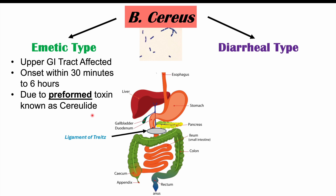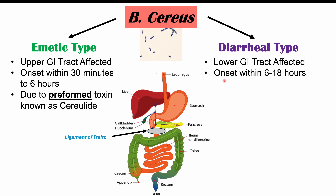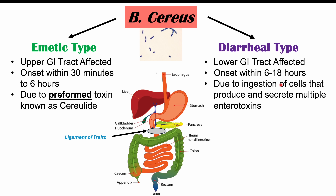Cerealide is produced by spores of this particular bacteria. Those toxins are inside food like rice, and when we consume it, we can become ill quite quickly within 30 minutes. In the diarrheal type, it's the lower GI tract that's affected — anything below or distal to the ligament of Treitz, so some of the later parts of the small intestine and the large intestine. Symptom onset in the diarrheal type is anywhere from six to 18 hours, and this is due to ingestion of cells that produce and secrete multiple enterotoxins. In the emetic type you're ingesting the toxin; in the diarrheal type you're ingesting cells that then produce toxins.